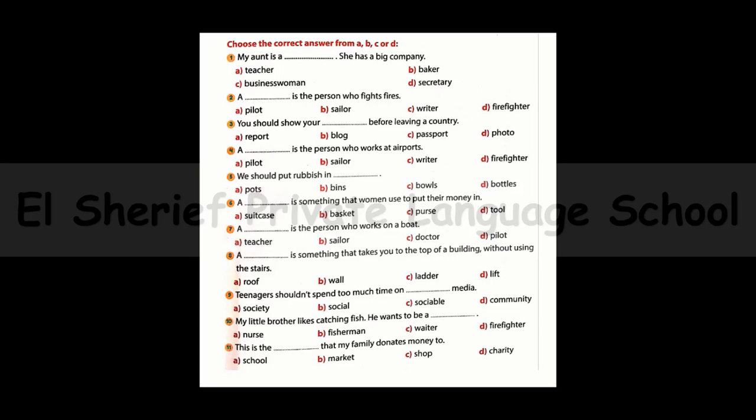Number eight: A ___ is something that takes you to the top of a building without using the stairs. The answer is: a lift. Number nine: Teenagers shouldn't spend too much time on ___. The options are: social media, society media, sociable media, or community media. The answer is: social media. Number ten: My little brother likes catching fish — he wants to be a ___. The answer is: fisherman. Number eleven: This is the ___ that my family donates money to. The answer is: charity. And this is everything for today — thank you for watching!